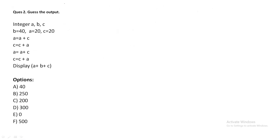The next question: guess the output. Integer a, b, c, v. v is assigned 40, a is assigned 20, c is assigned 20. Then a = a + c, so a is 20 plus c is 20, which becomes 40.